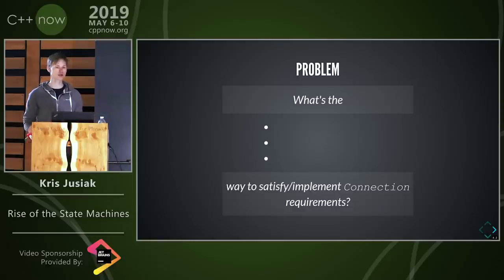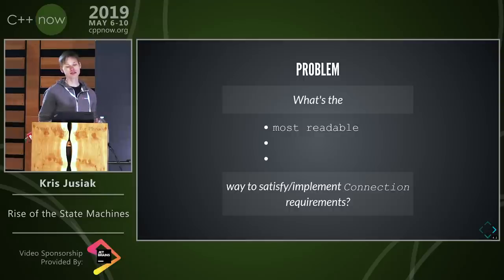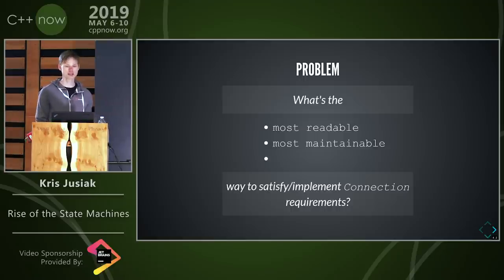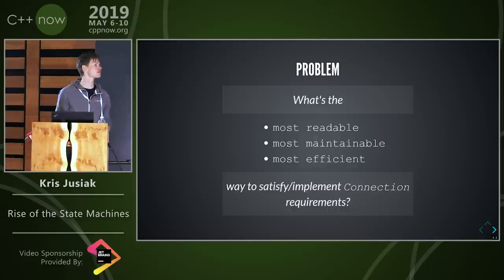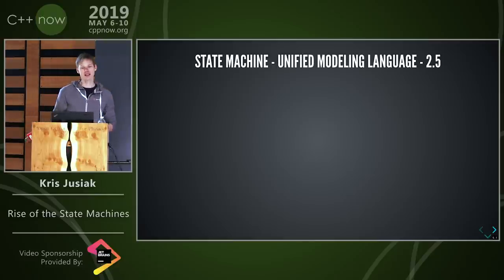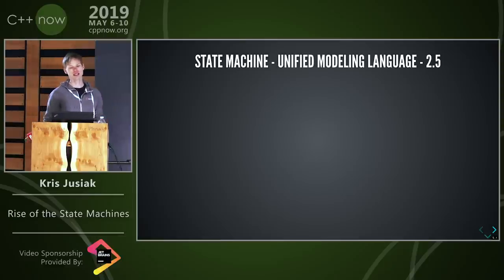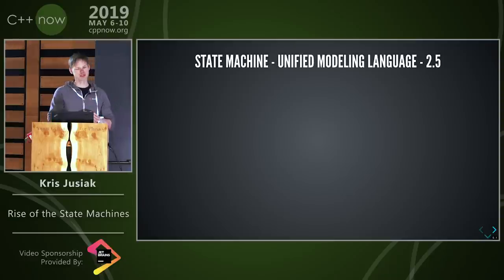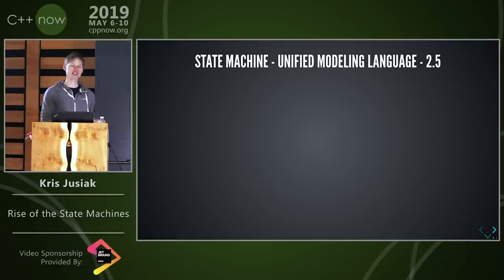The approach of the talk is to find and go through different approaches to find the best design from a readability perspective — the most maintainable approach and the most efficient, because we're talking about zero-overhead C++. So what is a state machine? In principle, state machines are very simple abstractions combined from multiple states, but we can only be in one at a given time.